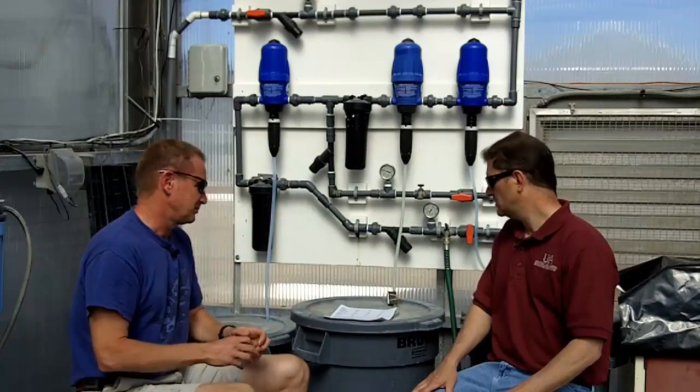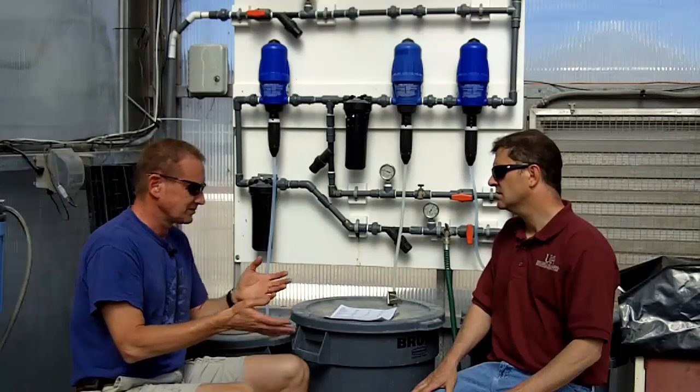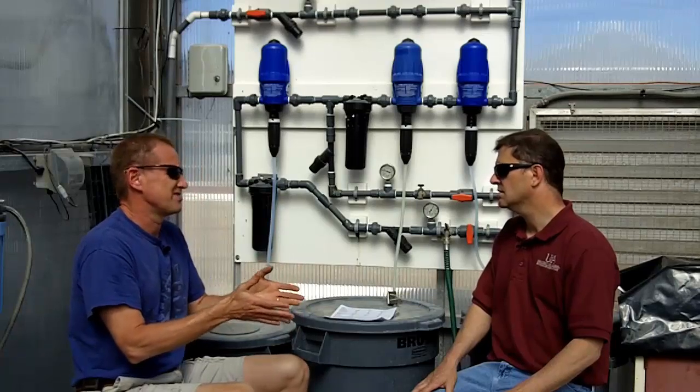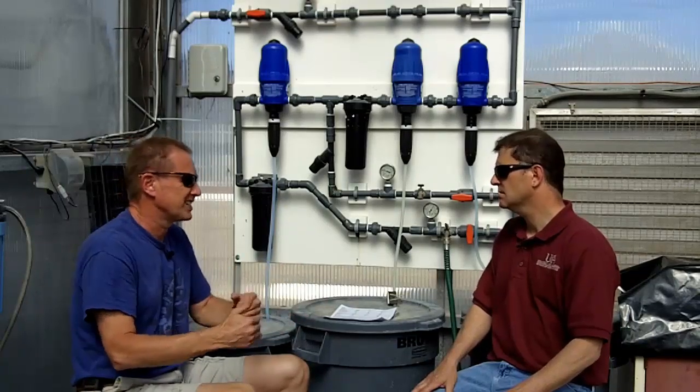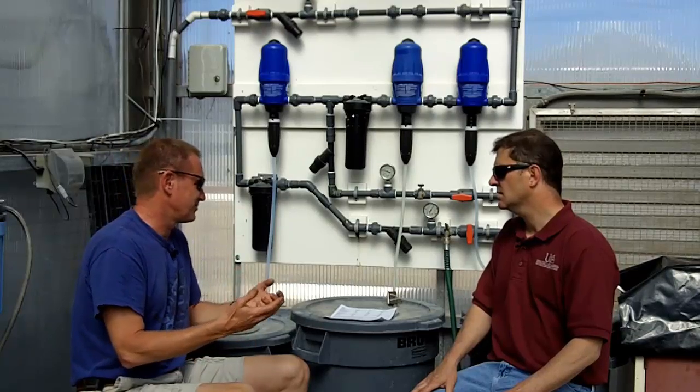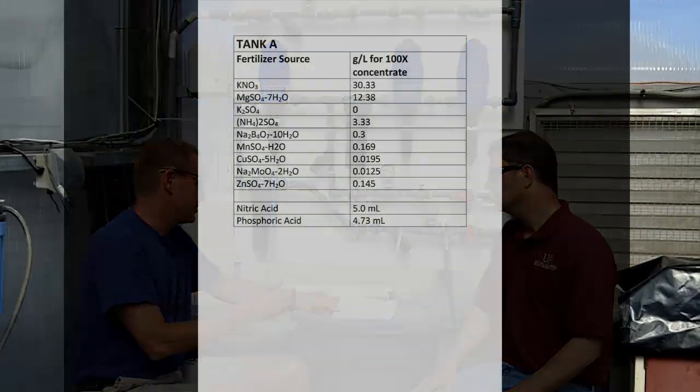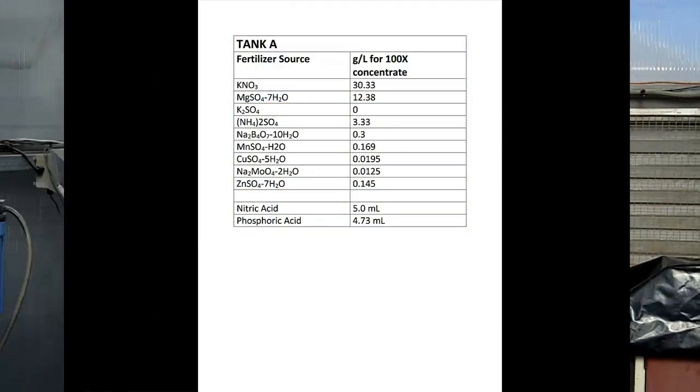So, to generate then our desired concentrations of nutrients, knowing what's in our water already, we use fertilizers and add them to our concentrated stock solution. And in our A tank, we use potassium nitrate as our primary potassium and nitrogen source. We're adding 30 grams per liter for our concentrate, our 100x concentrate of potassium nitrate.